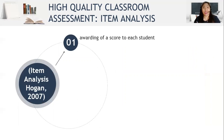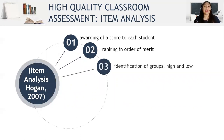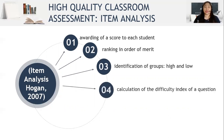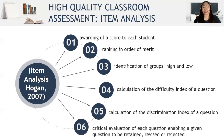There are three methods in item analysis. The first is from Hogan (2007). Hogan said the first step is awarding a score to each student, then ranking them in order of merit or score, then identifying the higher and lower groups, then calculating the difficulty index and the discrimination index of each question, and finally, critically evaluating each question to determine whether it should be retained, revised, or rejected.